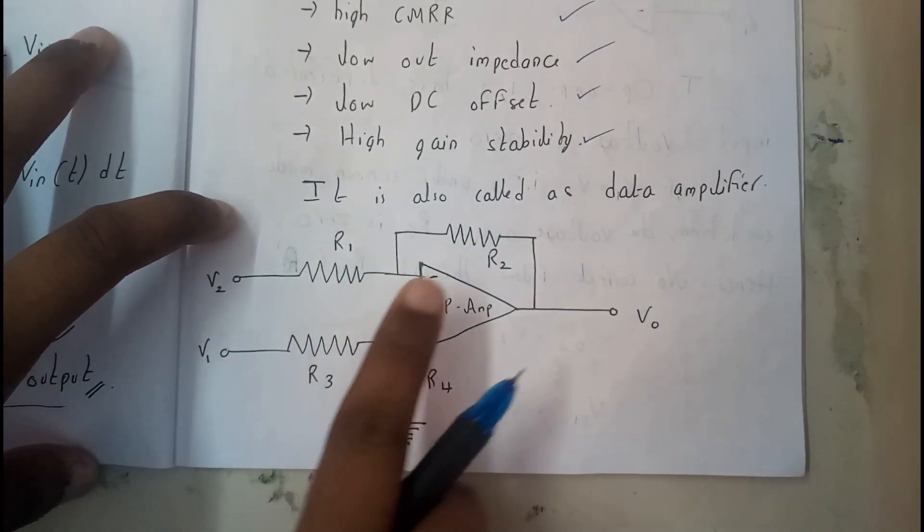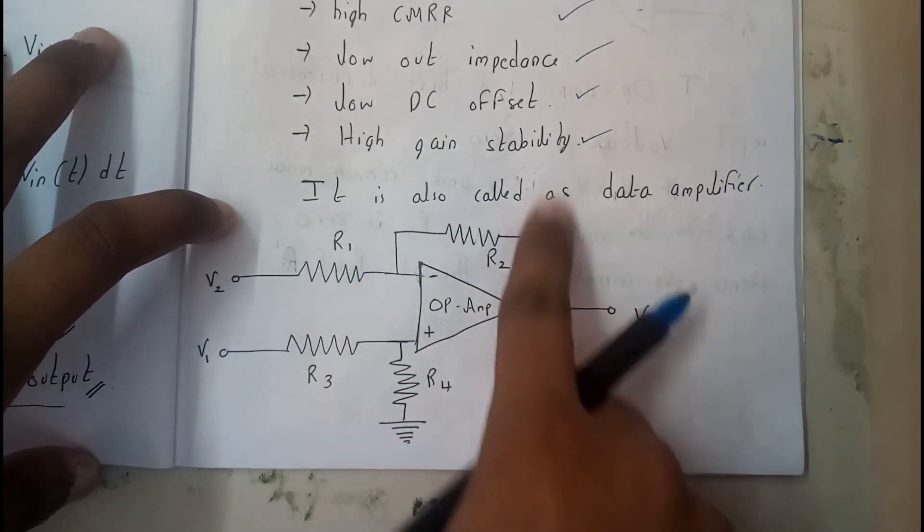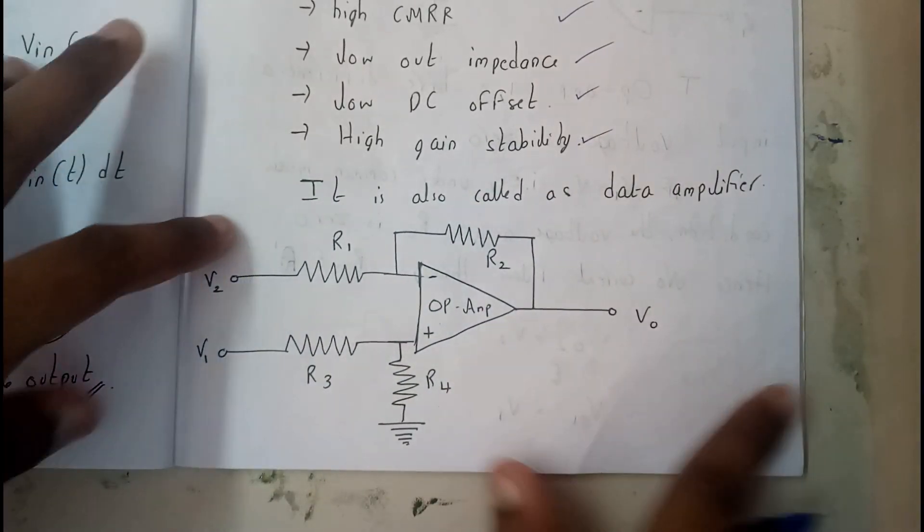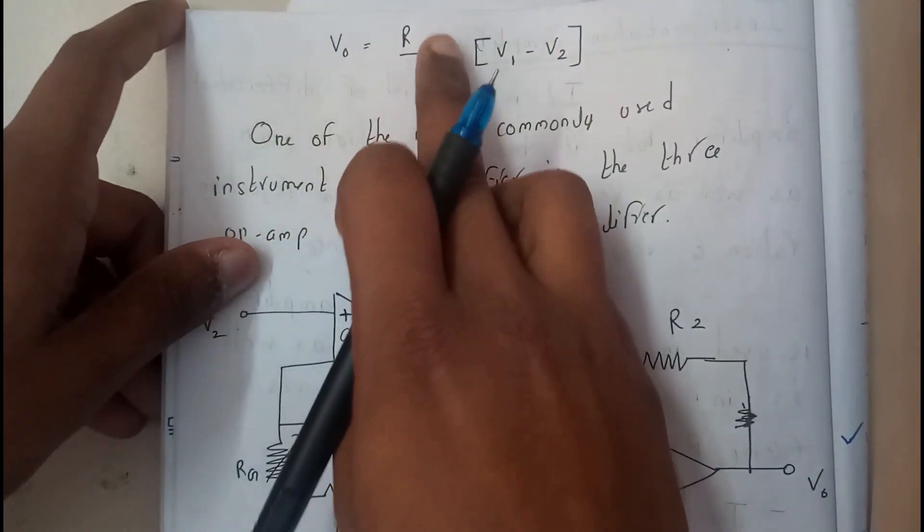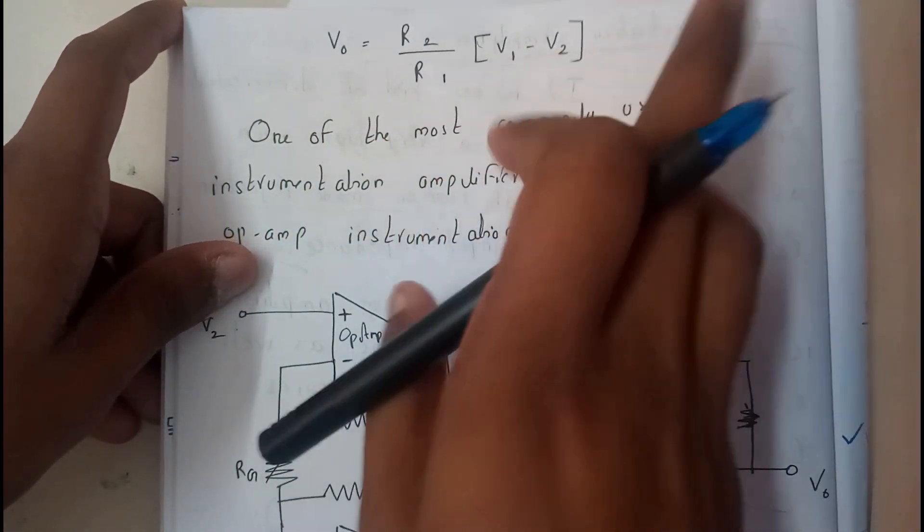From that we can say that output is equal to R2 by R1 times V1 minus V2. One of the most common instrumentation amplifiers is the three op-amp instrumentation amplifier.